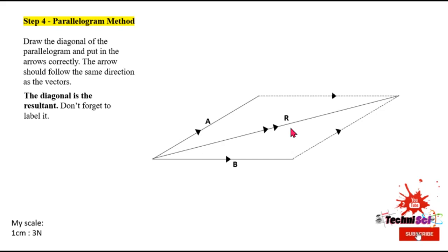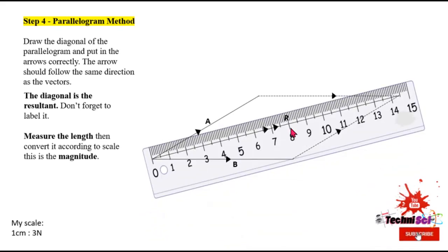We were asked to find the magnitude and direction of the resultant. So our next step is to measure the length, and then we're going to be converting it according to scale. And of course, that will give us the magnitude. So let's take our ruler now and measure the length of the resultant. From what we see here, our resultant, remember you have to start measuring from zero, our resultant is approximately 14.5 centimeters.